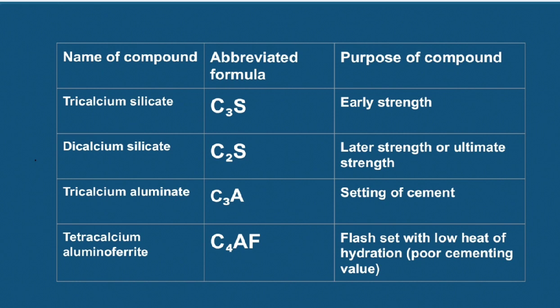The fourth compound is tetracalcium aluminoferrite, C4AF. Four CaO, one Al2O3, and one Fe2O3 mix together to form C4AF. It is responsible for flash set with low heat of hydration, but it does not have much cementing value in cement.